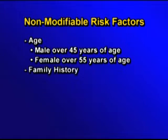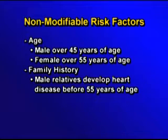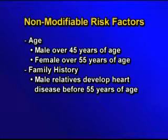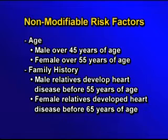To determine if you have a family history of premature heart disease, you would need to look at your male siblings and father. If they developed heart disease at age 55 or younger, that gives you a family history of premature heart disease. If your female siblings or mother developed heart disease at age 65 or younger, that also gives you a family history of premature heart disease.